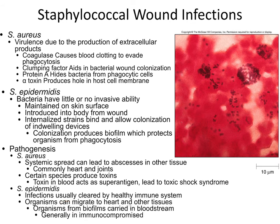Staph epidermidis is typically cleared up by a healthy immune system. If it gets into the blood, it can migrate to your heart and grow as a biofilm, causing bacterial endocarditis — something we'll talk about in a future lecture. Assuming it doesn't get into the blood, epidermidis is really only a problem in people who are pretty severely immunocompromised, because most people's immune systems have been dealing with it since forever and have gotten pretty good at it.